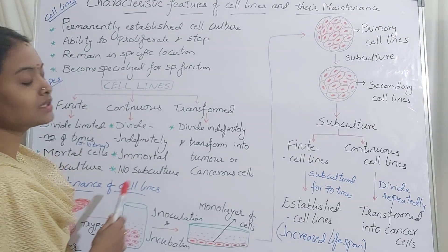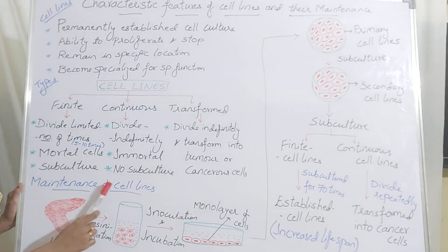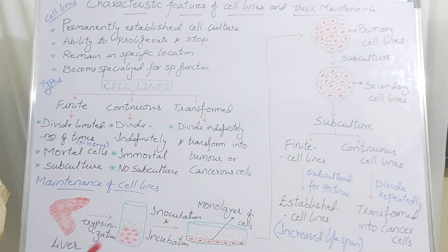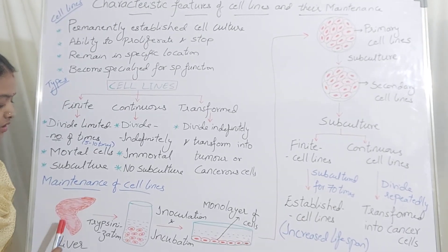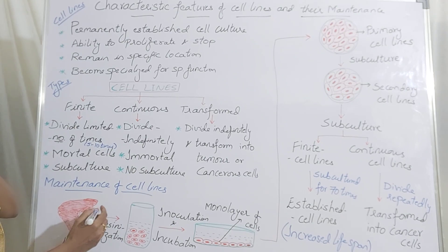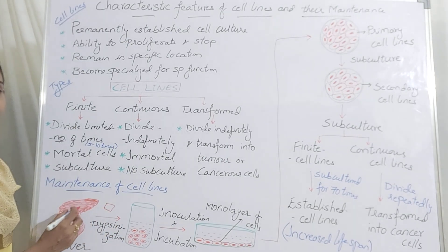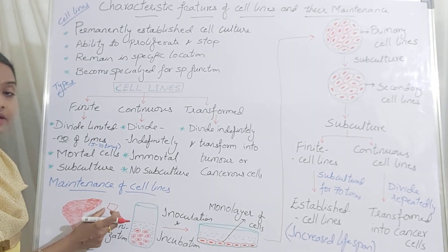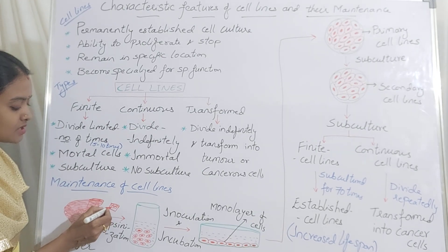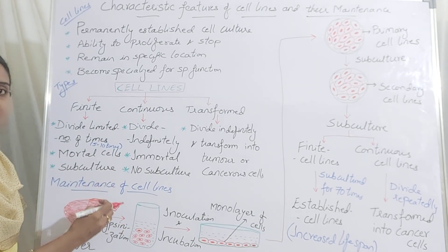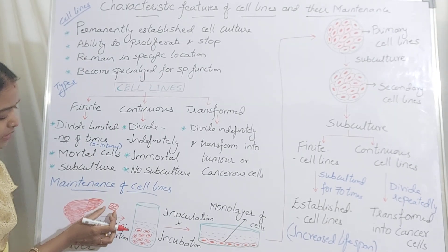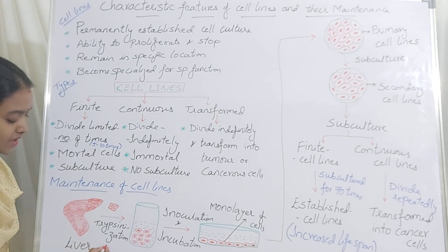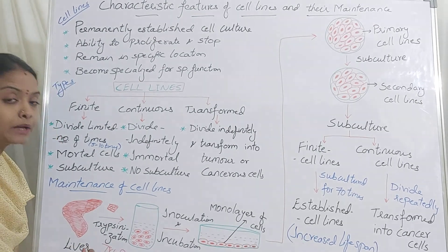Let us see how you can maintain these cells. When you see the maintenance of cell lines, first you are going to select any organ or tissue from which you want to have your cell lines. Here I have selected the liver. From the liver, I am going to take a small cube of tissue — a small cube of tissue will be sliced and I am going to take that portion. This tissue has to be disaggregated. Disaggregation means separation — the tissue is a group of cells which has to be separated, and that separation is called the disaggregation process. I am going to use the enzyme trypsin for disaggregation.